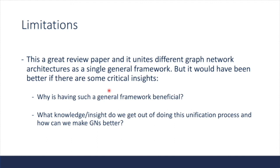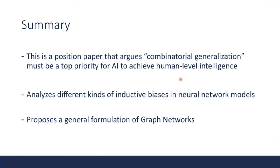In summary, this was a position paper that argues combinatorial generalization must be a top priority for AI to achieve human-level intelligence. We saw analysis of different kinds of inductive biases in neural network models, and a general formulation of graph networks.